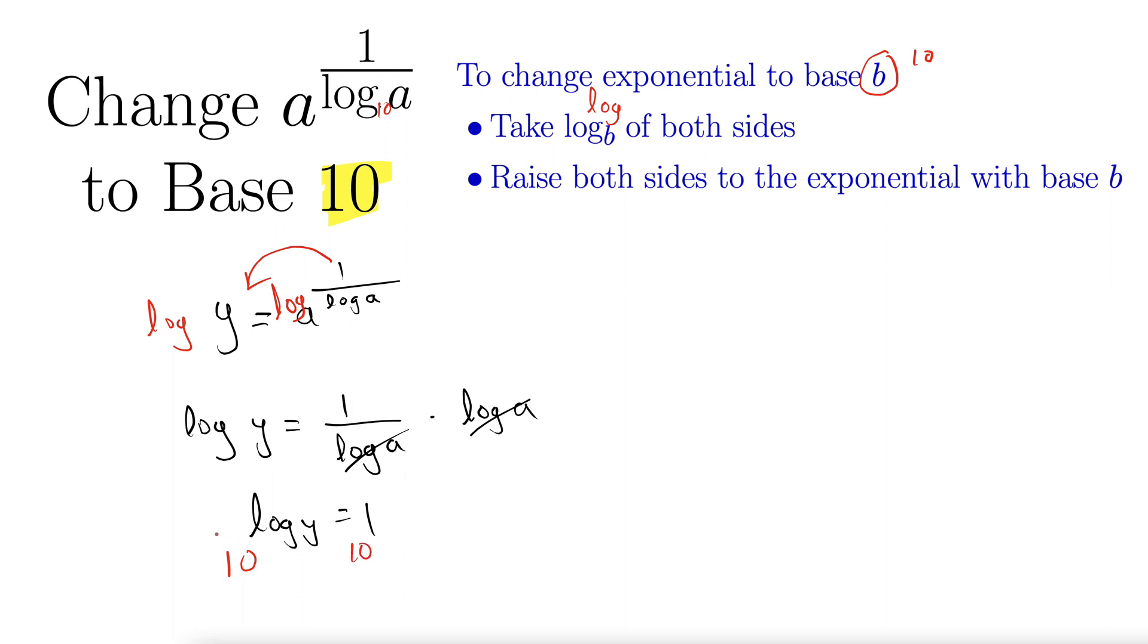Base 10 and the log are inverses. They undo each other, leaving us simply with y equals 10 to the 1, which is 10. So a surprisingly simple answer for an exercise that looked pretty complicated at first.